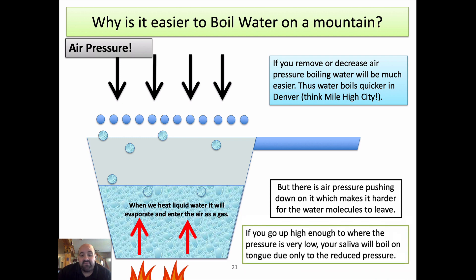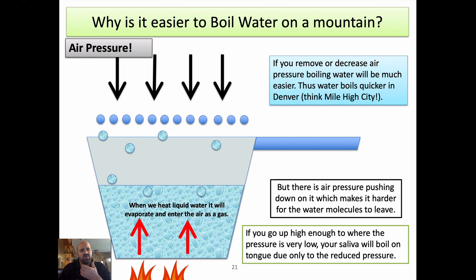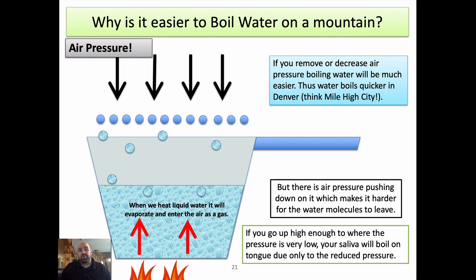Actually, if you go up high enough, there's a point where the pressure can be so low that your saliva will boil on your tongue — only due to reduced pressure, no heat. There was a NASA astronaut they put in big vacuum tanks for space training. He lost his oxygen when his mask got disconnected, and he blacked out in 10–15 seconds. The last thing he remembered before passing out was the saliva on his tongue boiling in the reduced pressure — but it wasn't burning him. It's not a hot boil; it's boiling at a colder temperature, because the boiling point of water depends on pressure.